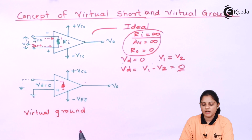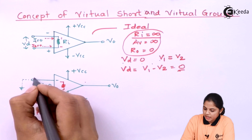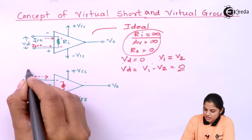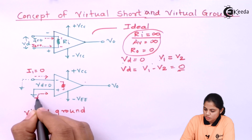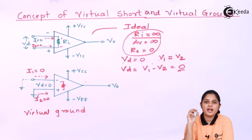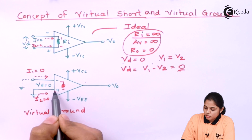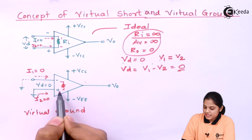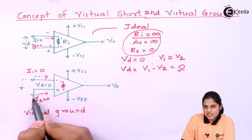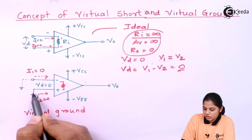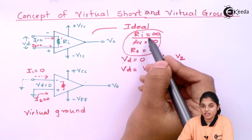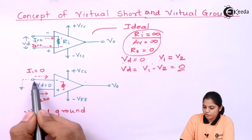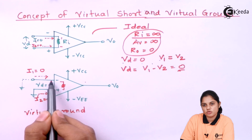If Ri is infinite, current flowing through i1 is equal to zero, and current flowing through the other terminal will also be zero. In another way: if the non-inverting terminal is connected to ground, the current flowing through that terminal will be zero. Due to having infinite resistance, current flowing through the inverting terminal will also be zero.